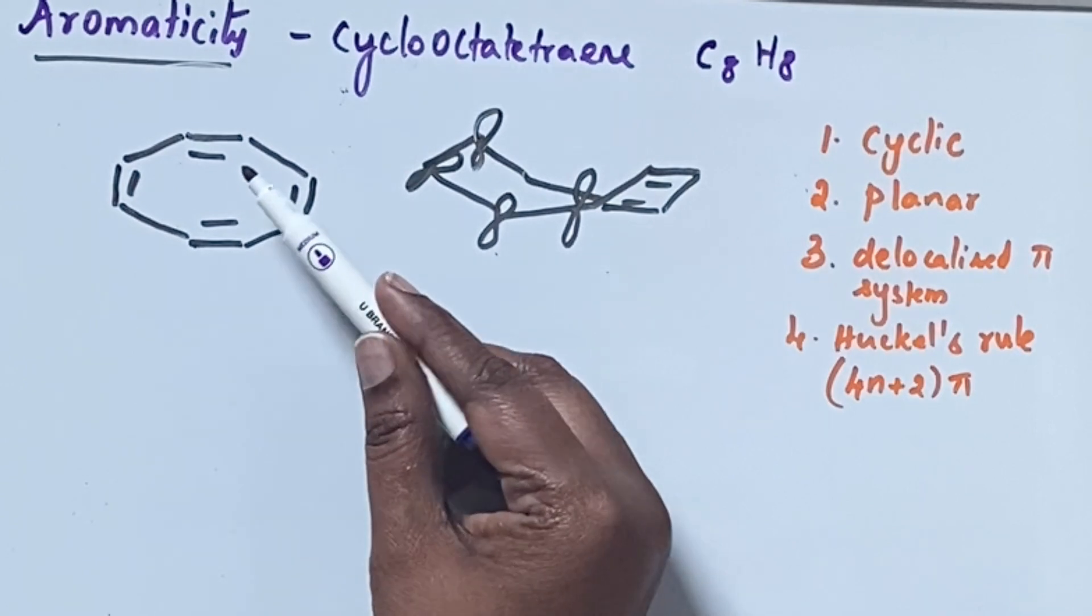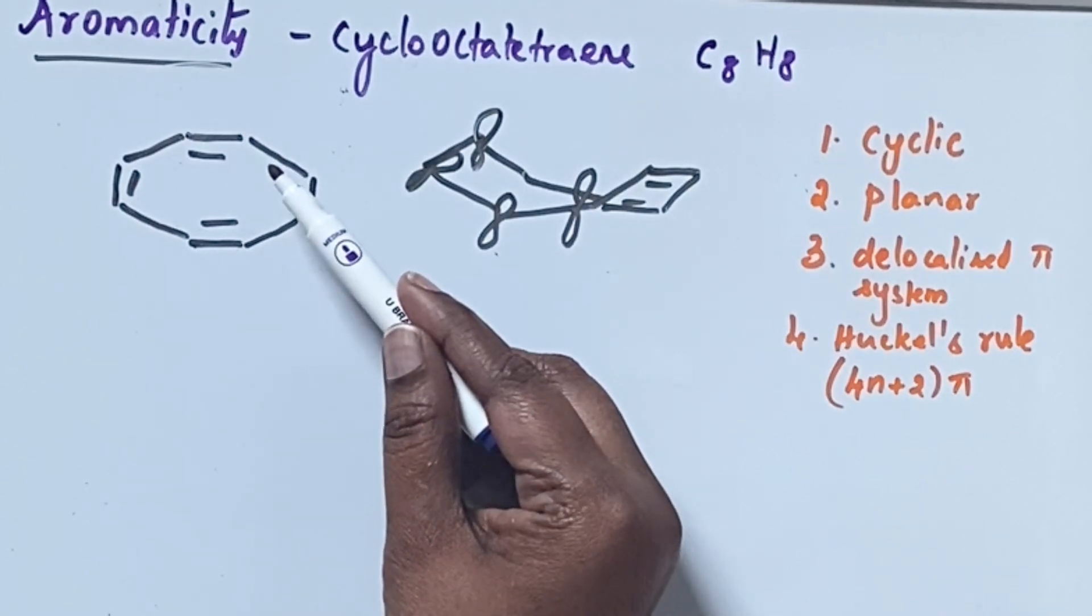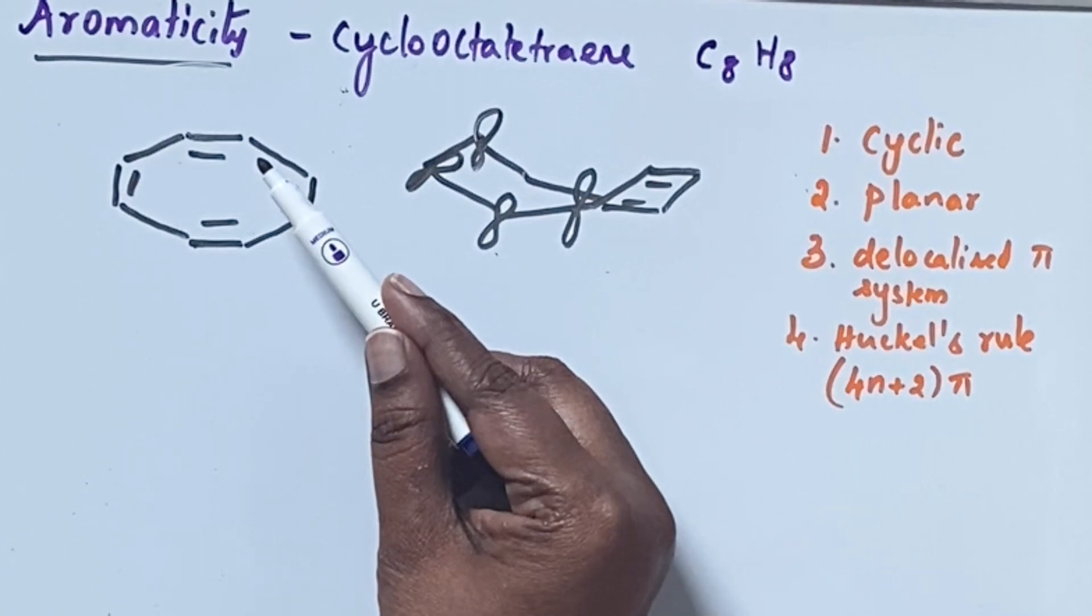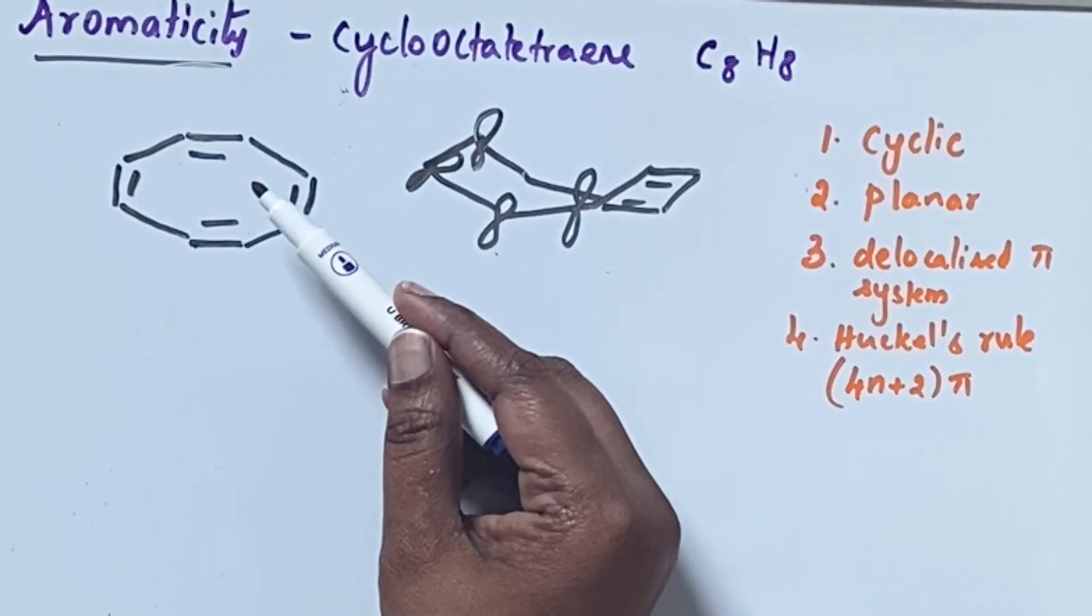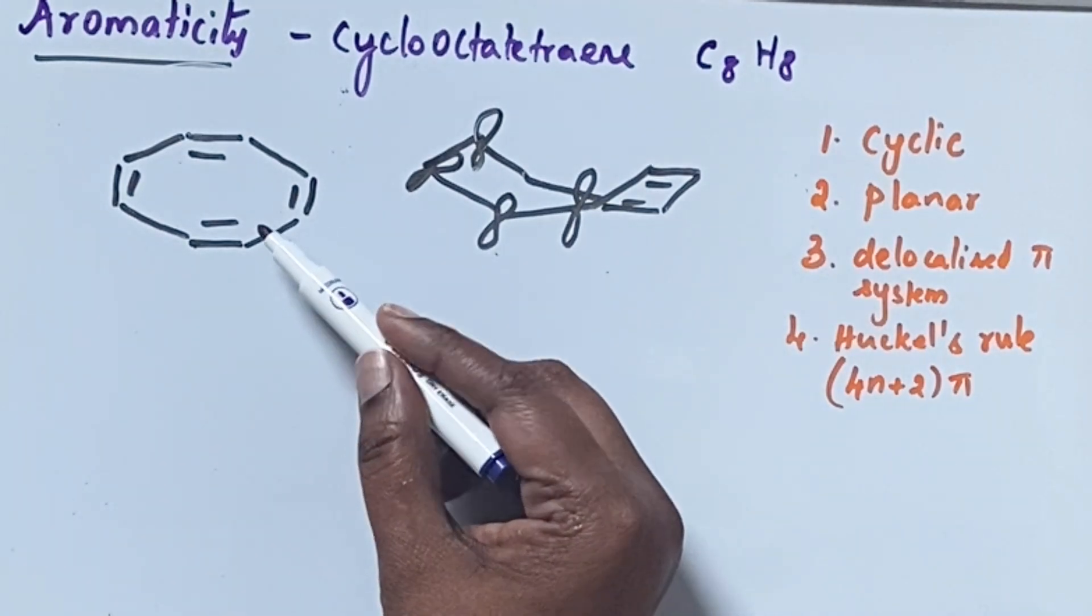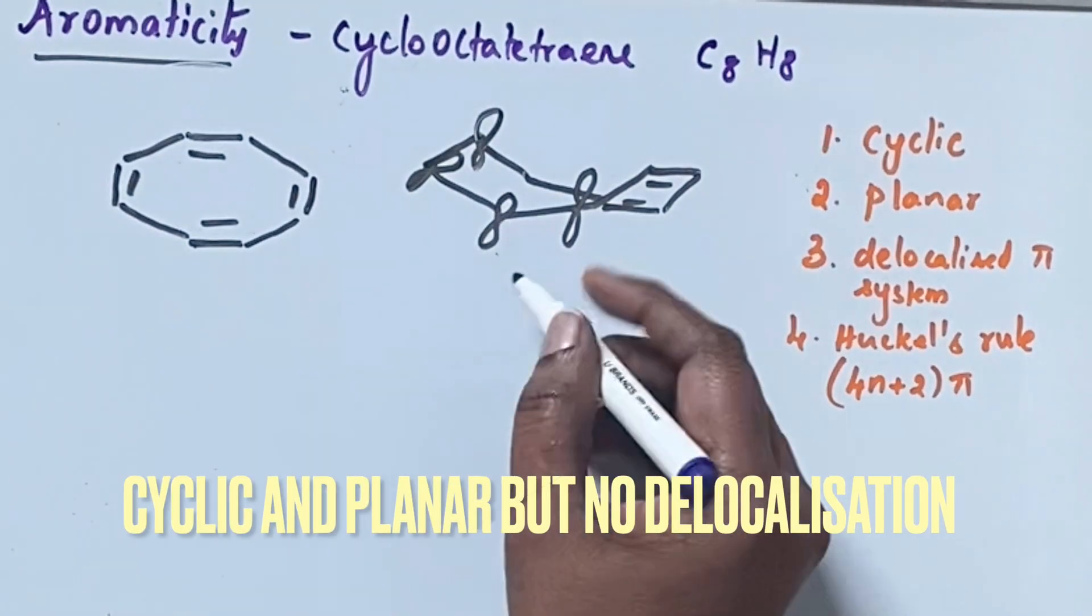It contains alternate single and double bonds but in case of cyclooctatetraene it is cyclic but it is not planar like benzene because this cyclooctatetraene is tub shaped.